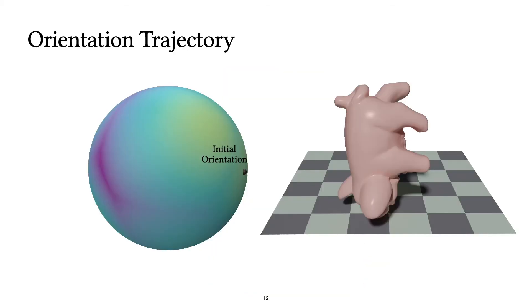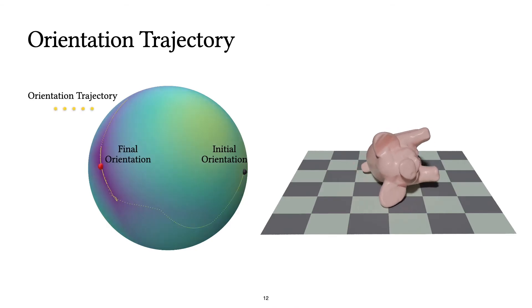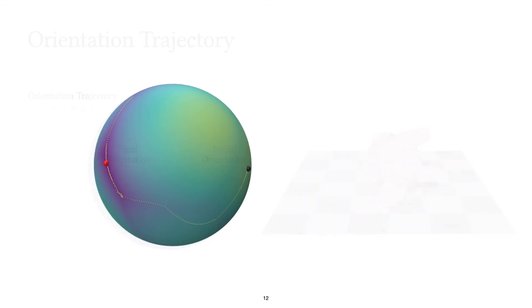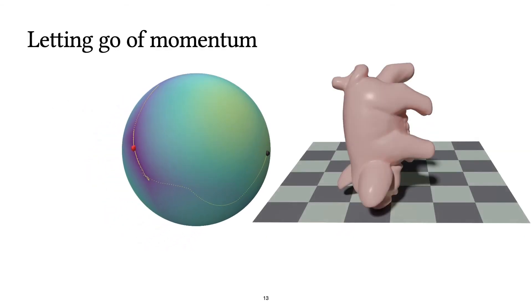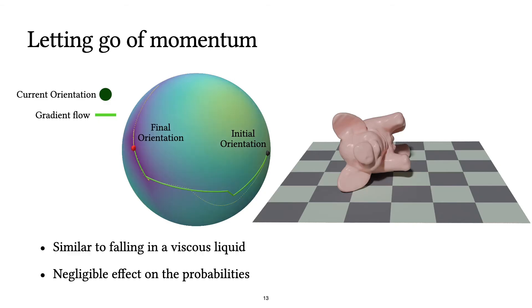If we look at one of these falling instances, we see that the orientation follows a rather complicated trajectory until it stabilizes at the local minimum. Instead, we make a simplifying assumption. We assume that the orientation only follows the gradient direction of this function. This assumption is similar to assuming that the shape is falling in a viscous liquid. And even though it may look limiting for a single drop instance, it has negligible effects in practice on the probabilities that we are trying to compute.